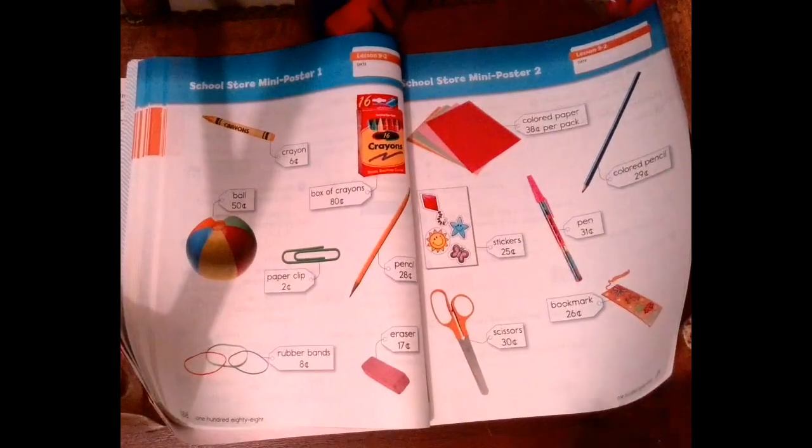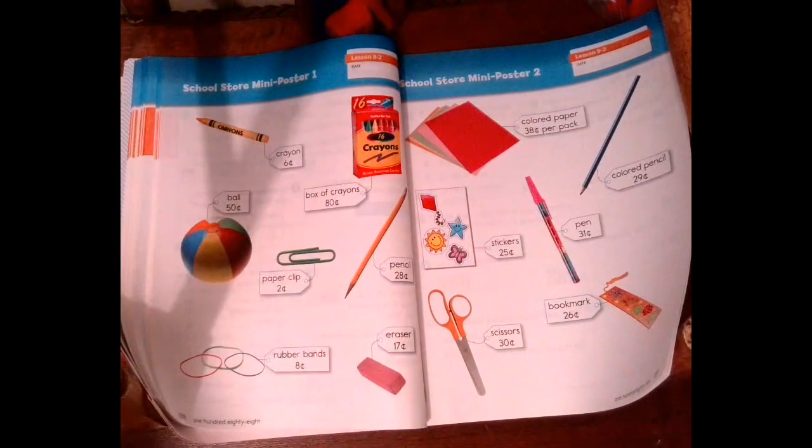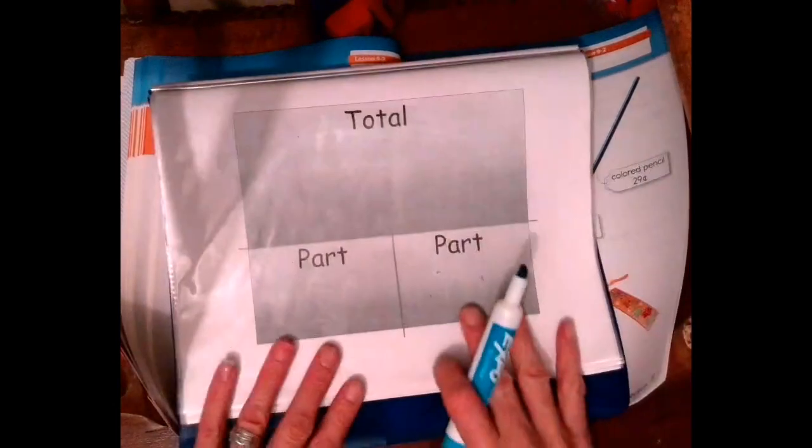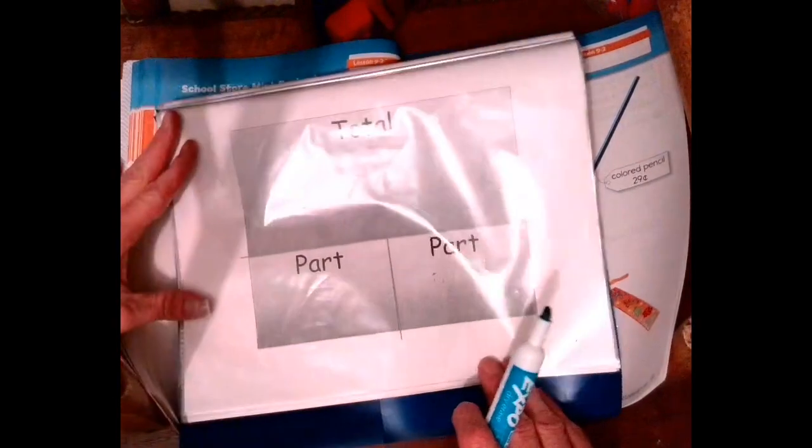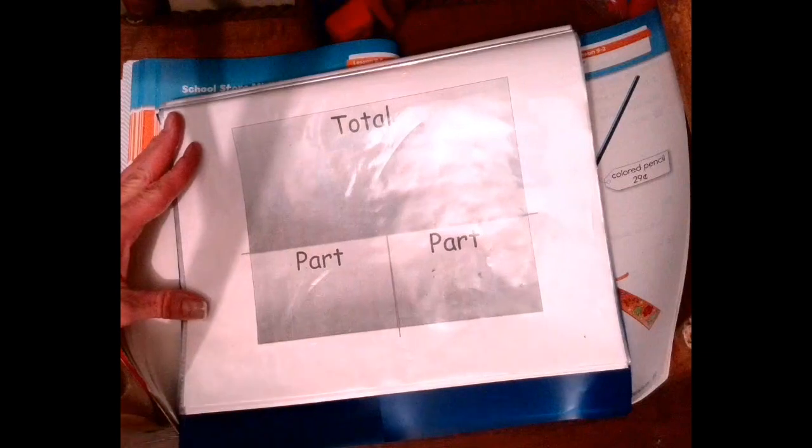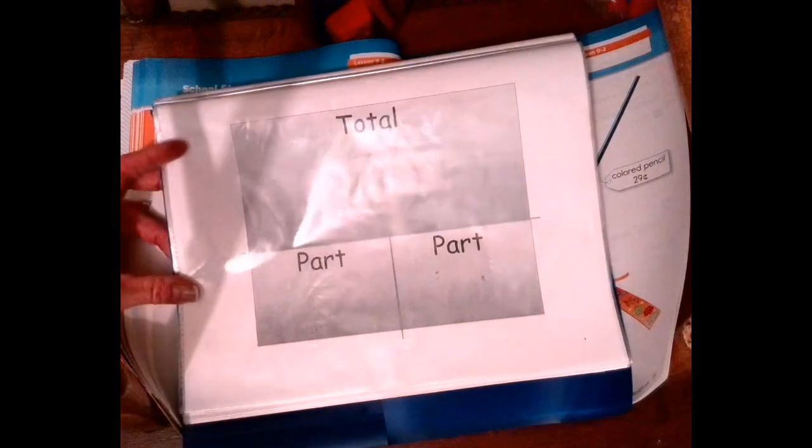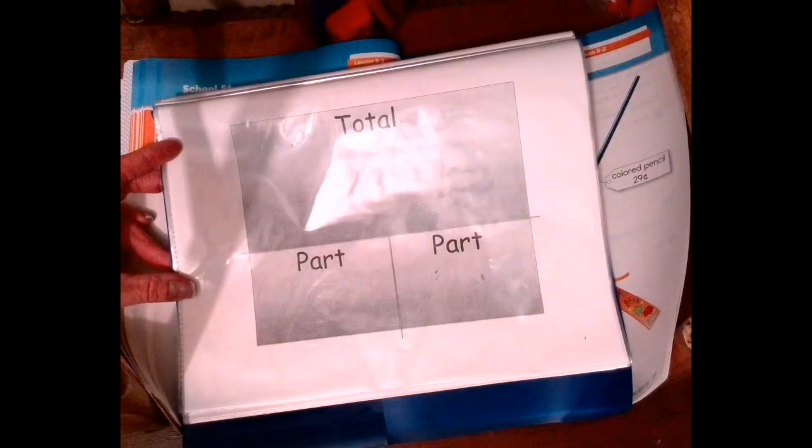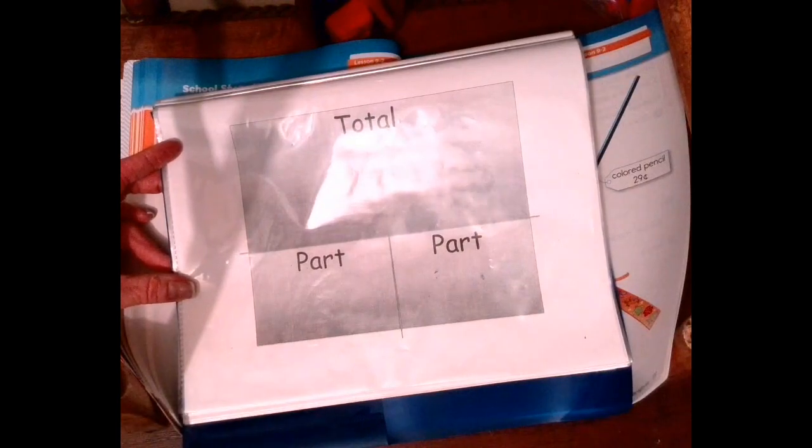We're going to use this chart, the School Store Mini Poster, to work on our word problems. The first one, we're going to use the parts-parts-total diagram. The word problem is: Omar bought an eraser for 17 cents and stickers for 25 cents. How many cents did Omar spend?